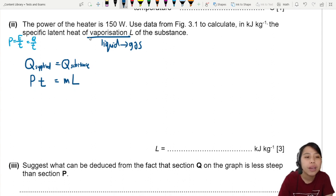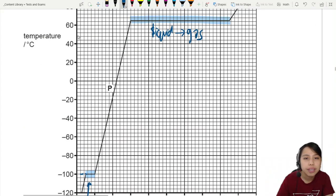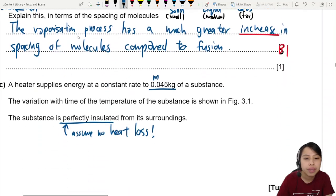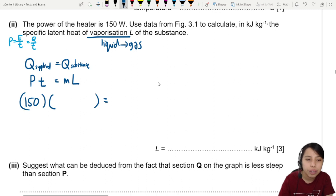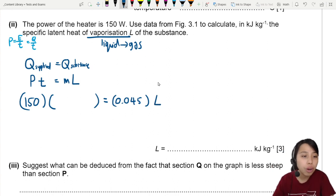So power, 150 watts. Time interval, how long does it take? What's the mass? 0.045 kg of a substance. So 0.045 kg times L. How long does it take this much to completely bubble and become gas? Let's look at the graph. So the transition between liquid and gas is the one higher up here. We have to see what is the time.